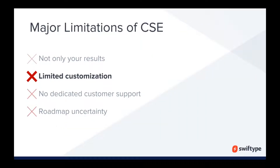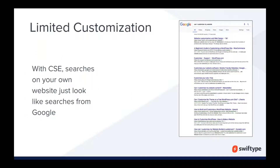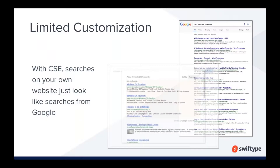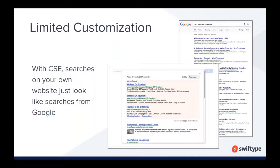Another limitation is the limited amount of customization that the Custom Search Engine product offers. If you care about customization, this next section is really going to resonate with you. Another distraction your visitors will face is the fact that search results from Custom Search look a lot like search results from Google. The combination of those third-party ads and the look of the results page makes it seem like they're not even on your site anymore. Depending on how you've implemented it, I've been on sites that will completely take me off the website I'm visiting and lead me to a Google search results page.